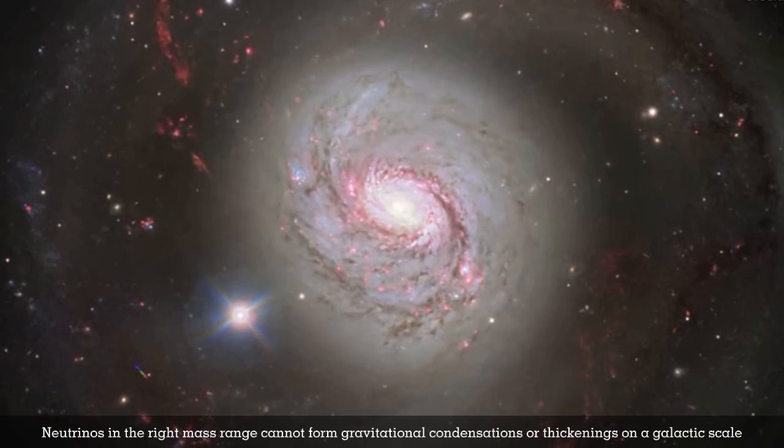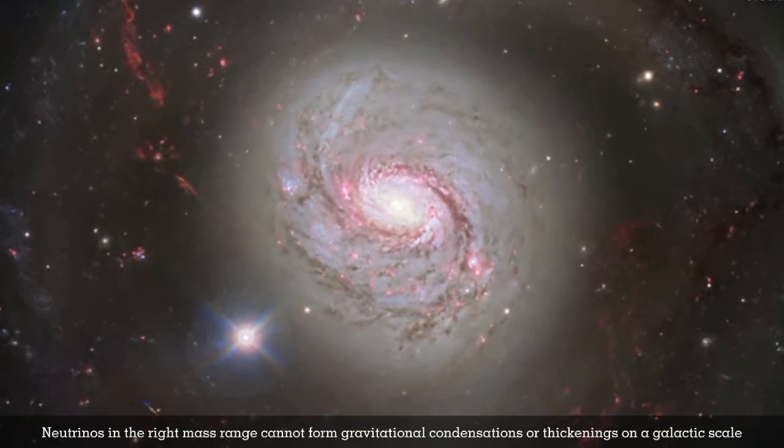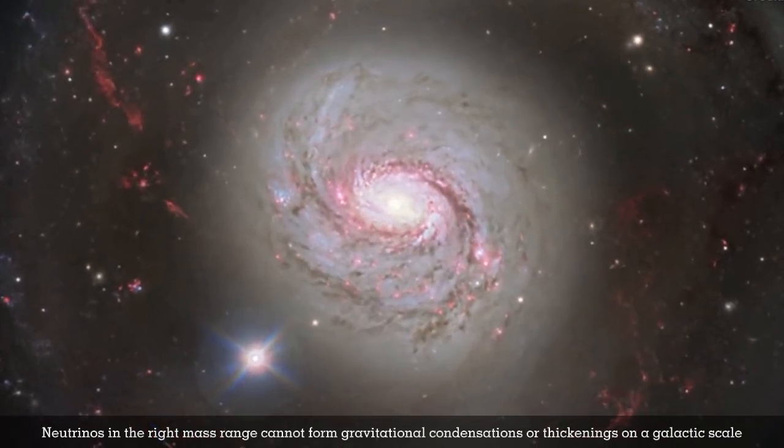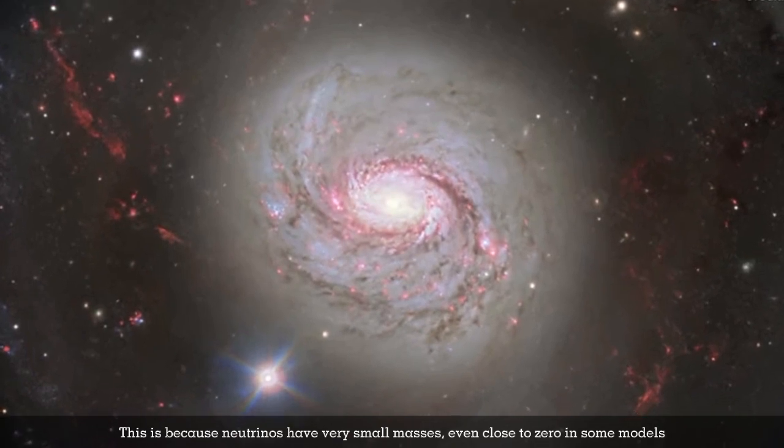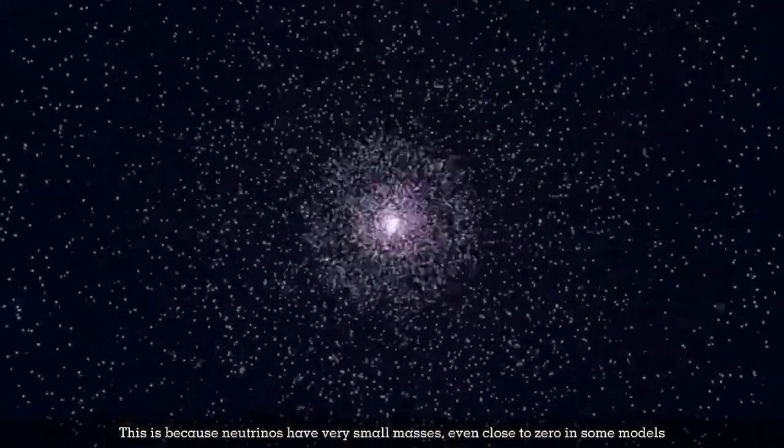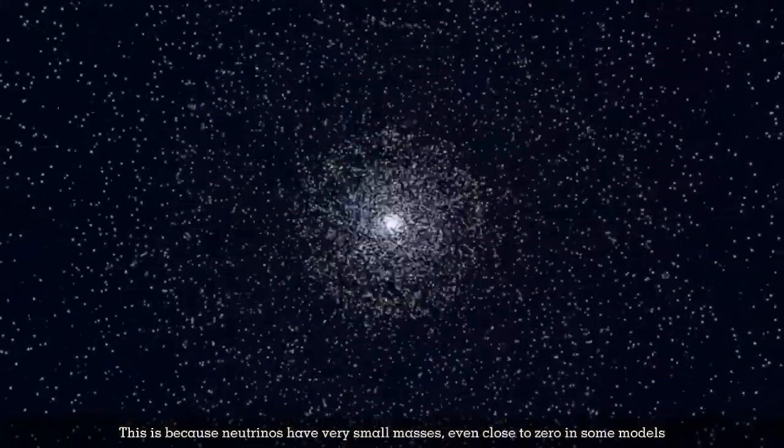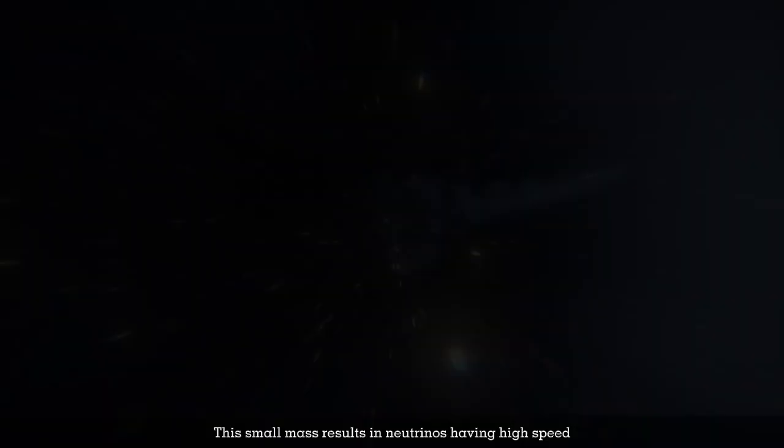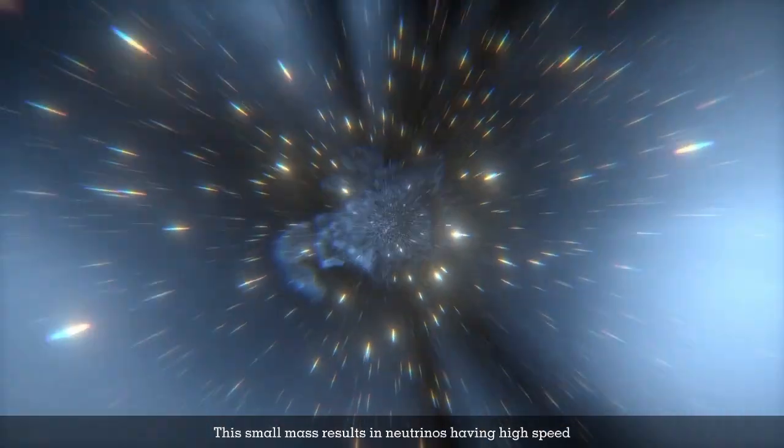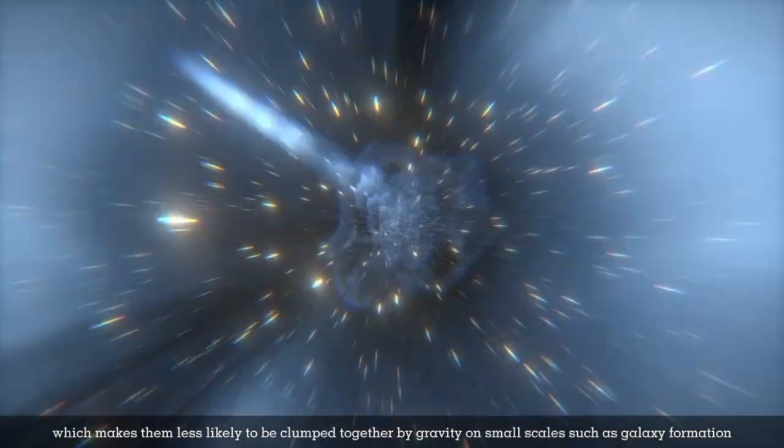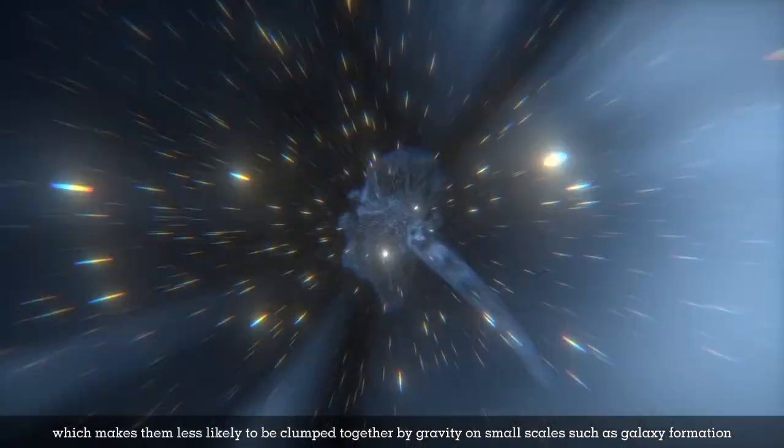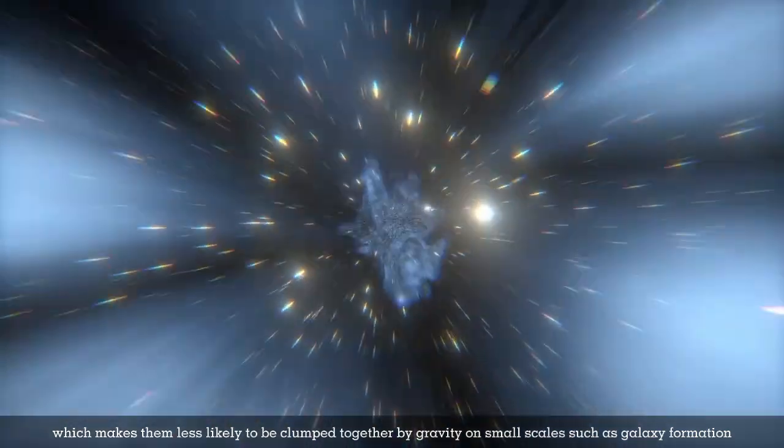Neutrinos in the right mass range cannot form gravitational condensations on a galactic scale. This is because neutrinos have very small masses, even close to zero in some models. This small mass means neutrinos can have high speeds, making them less likely to clump together by gravity on small scales like galaxy formation.